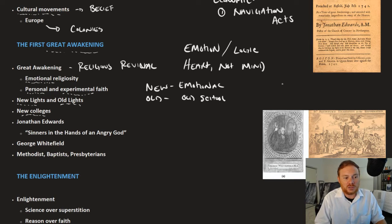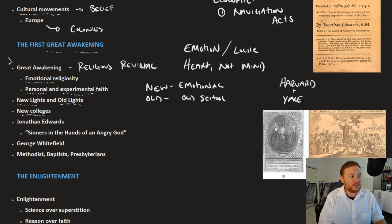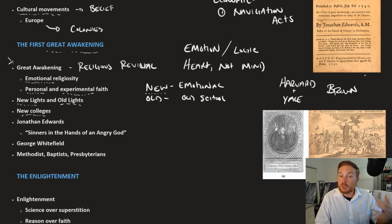Because preachers had different ways of doing things, it led to new colleges. Some of the first colleges created in the United States were Harvard and Yale, which were religious schools. But the Great Awakening made more colleges. Modern day Brown University was in part created by new lights, and these new lights were able to make these new colleges.